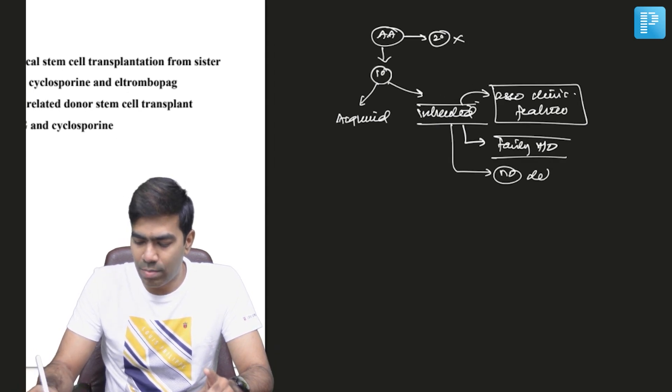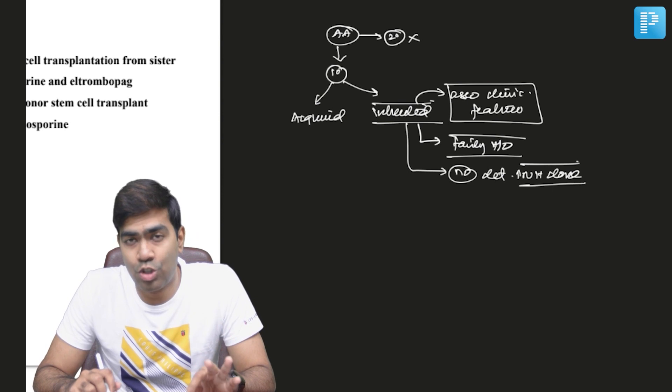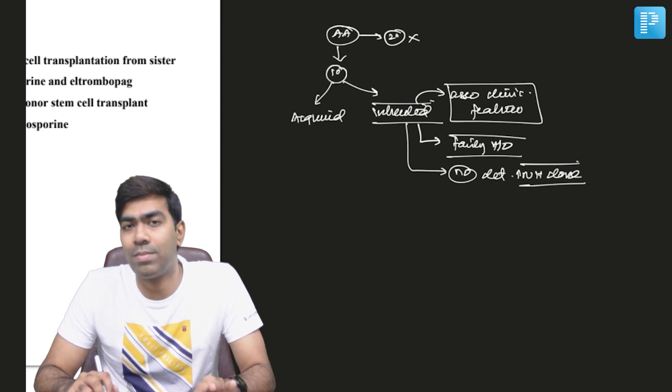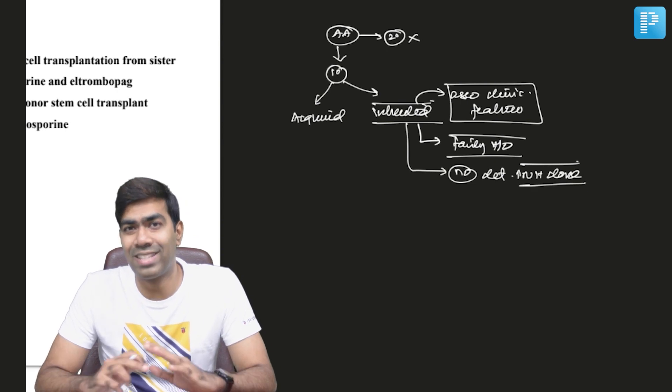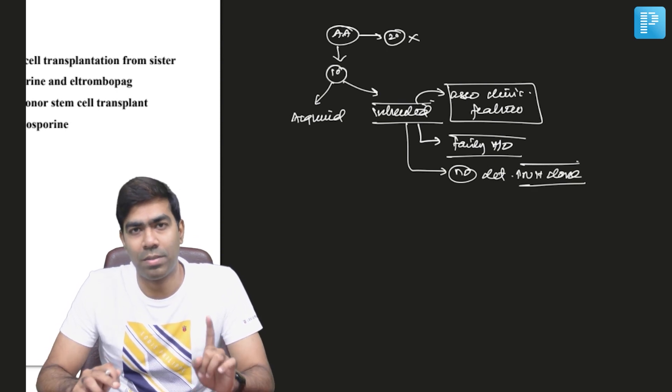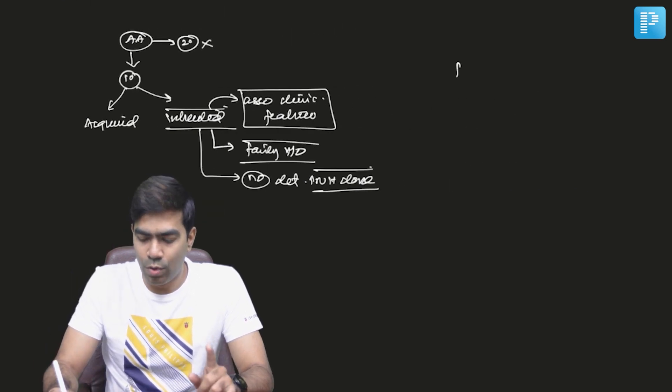not have a detectable PNH clone. It's a very, very important point. Remember, PNH is an acquired stem cell disorder and presence of a PNH clone doesn't mean it's always paroxysmal nocturnal hemoglobinuria. That is why we use flow